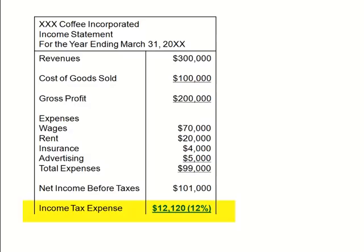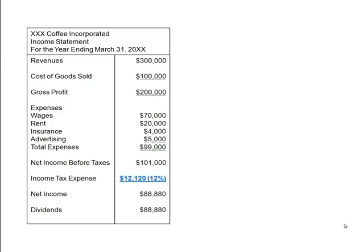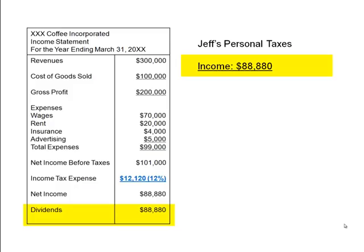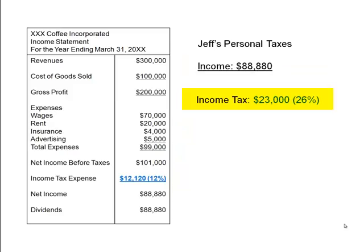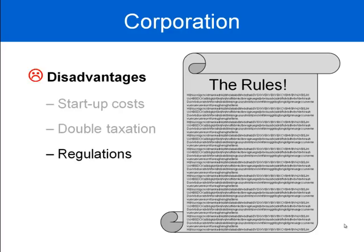That leaves a net income of $88,800. If Jeff decides to take that money as profit — called paying dividends — he must then show $88,800 as income at the personal level and file personal income taxes, paying an additional $23,000 as an individual. The same money has been taxed twice: once at the corporate level, and once again at the individual level when dividends are paid.